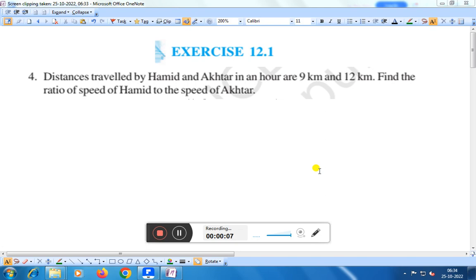Distances travelled by Hamid and Akhtar in an hour are 9 km and 12 km. Find the ratio of speed of Hamid to the speed of Akhtar.